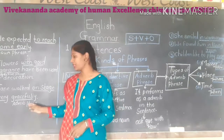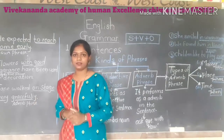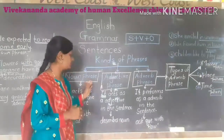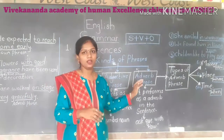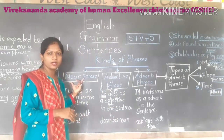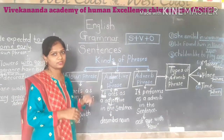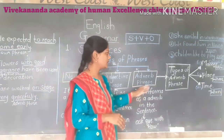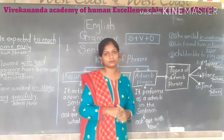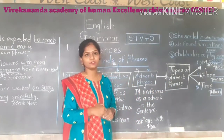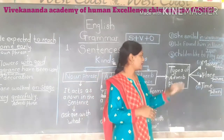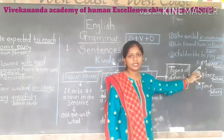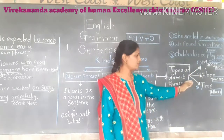In these three types of phrases — noun phrase, adjective phrase, and adverb phrase — the first two do not have subtypes. However, the adverb phrase has three subtypes: the first is the adverb phrase of manner, the second is the adverb phrase of place, and the third is the adverb phrase of time.